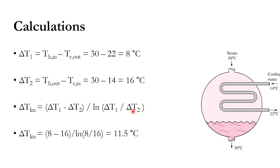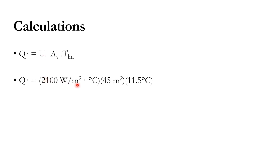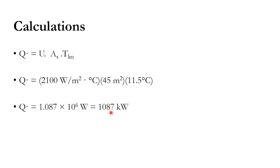The log mean temperature difference is 11.5°C. Using Q = U·A·ΔT_m, with U = 2100 W/m²°C, area = 45 m², and LMTD = 11.5°C, the overall heat transfer rate Q is calculated as 1087 kW.